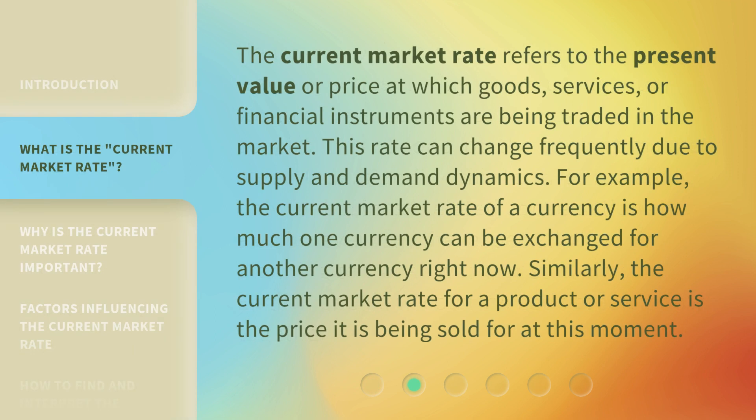The current market rate refers to the present value or price at which goods, services, or financial instruments are being traded in the market. This rate can change frequently due to supply and demand dynamics. For example, the current market rate of a currency is how much one currency can be exchanged for another currency right now. Similarly, the current market rate for a product or service is the price it is being sold for at this moment.